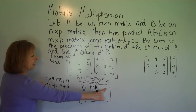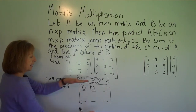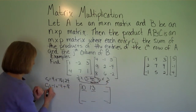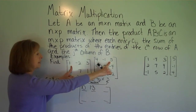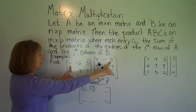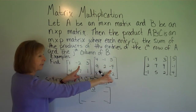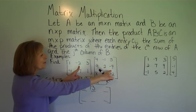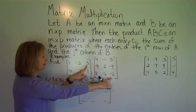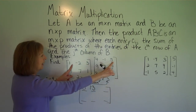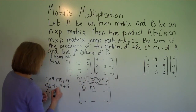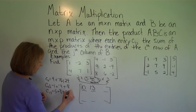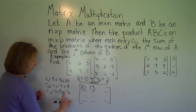The next entry in that top row is the first row, third column — c sub 1,3. We take the first row times the third column. So: 1 times 5 is 5, plus negative 2 times negative 4 is 8, plus 3 times negative 2 is negative 6. So 5 plus 8 is 13, plus negative 6 is 7.